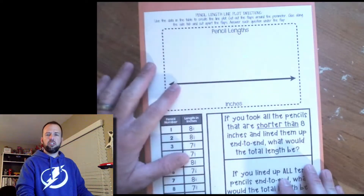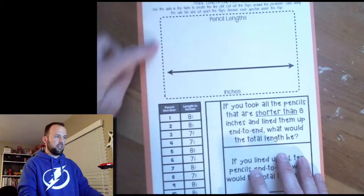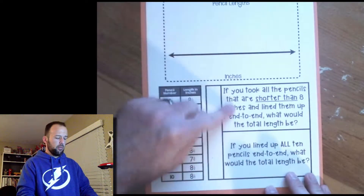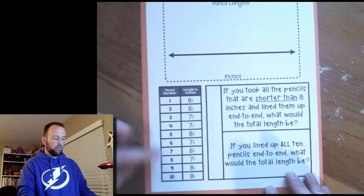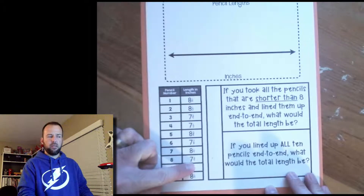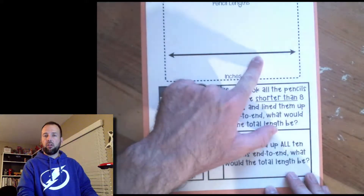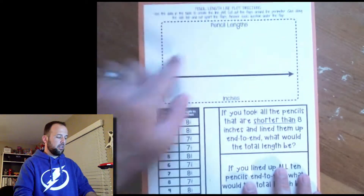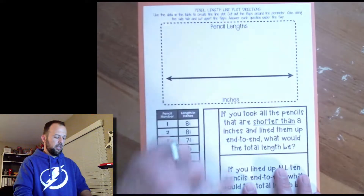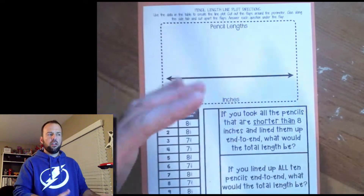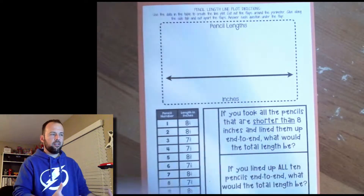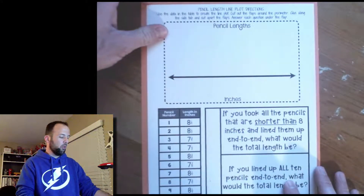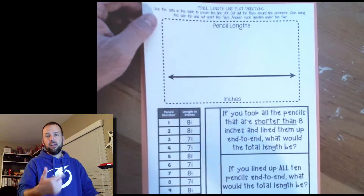I have my pencil length activity sheet here ready to go. We're going to walk through this together — you'll notice it has a couple of parts. This first part is where we're actually going to draw our line plot. Then we have some questions to answer, and over here we have data for ten pencils and their lengths. We're going to take these lengths, label them on our line plot, and then plot how many we have of each length. I'm going to cut this out and glue it down.